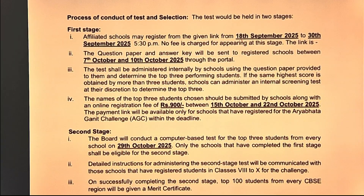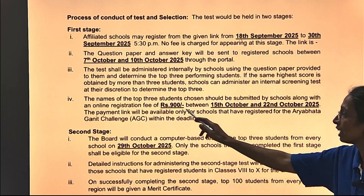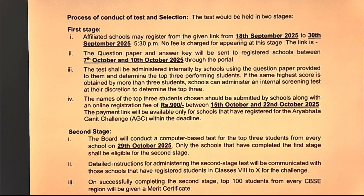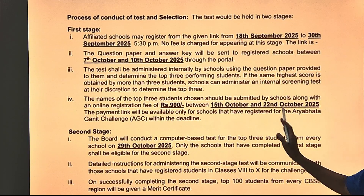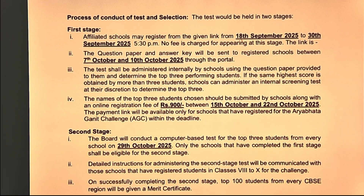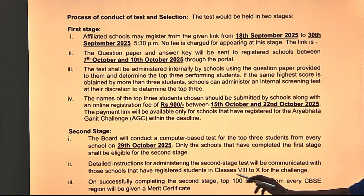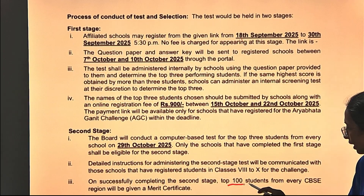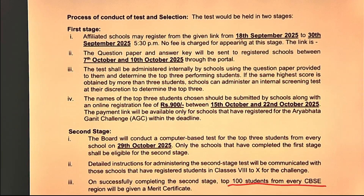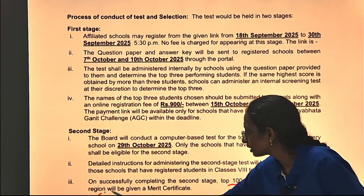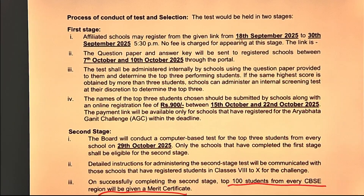For stage 2 there is a participation fee of 900, and stage 2 will occur on 29th October 2025. A school will register for stage 2 from 15th October till 22nd October 2025. The top 100 students from every CBSE region who successfully compete in stage 2 will be awarded a merit certificate.